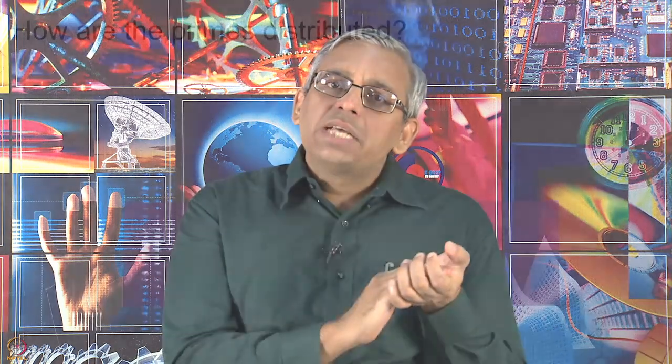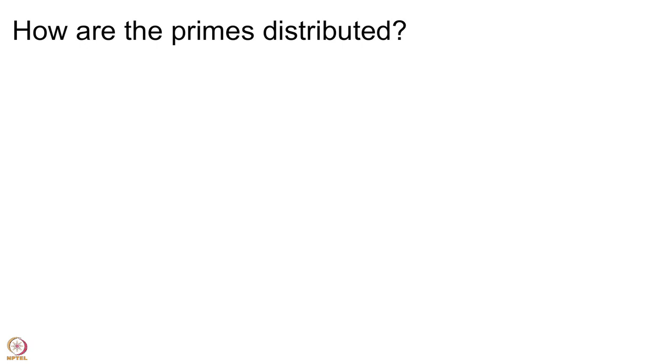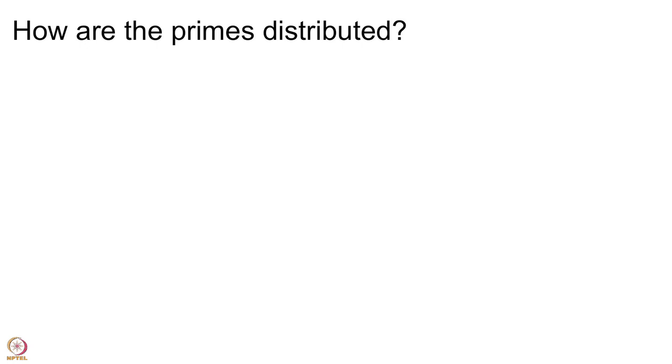On the other hand, I have been talking about the twin prime conjecture, which says that there are infinitely many primes such that the very next odd number is also a prime. So the question of how primes are distributed is one that has been bothering mathematicians for quite some time.